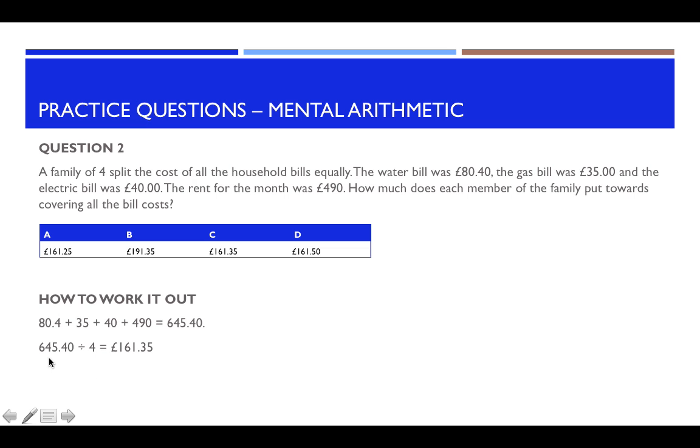And next you would need to divide that number by the number of people paying. So there's four people in this family and they're splitting the cost equally. So you would do £645.40 divided by 4 equals £161.35. So your answer to this question would be C.